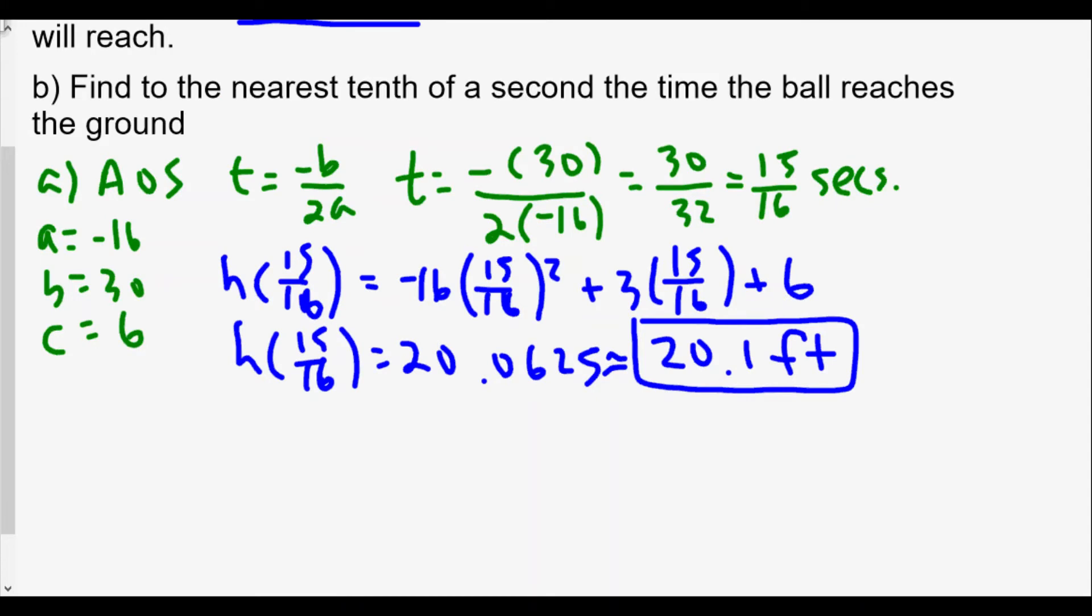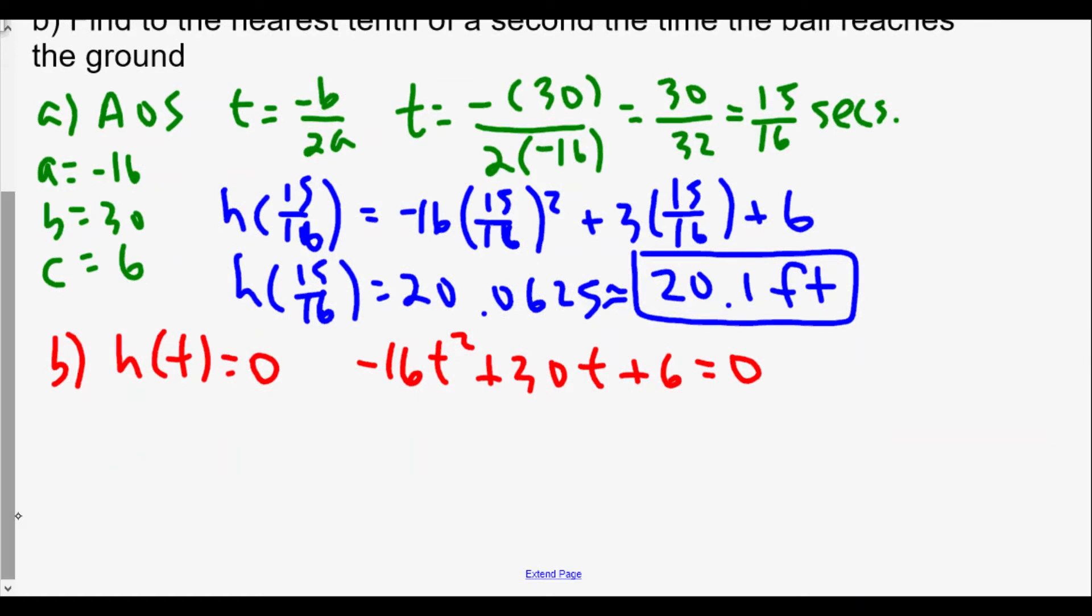For Part B, it says find to the nearest tenth of a second the time the ball reaches the ground. For this part, we're going to find when h(t) = 0, when the height equals zero. Now we're going to solve algebraically by doing -16t² + 30t + 6 = 0. What we can do to make things easier is divide both sides by -2, and we'll probably use our quadratic formula.